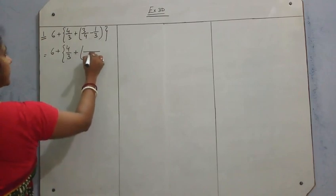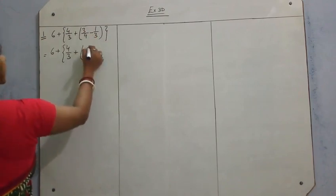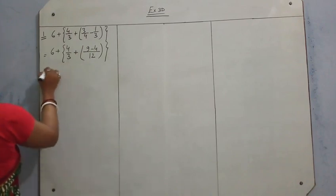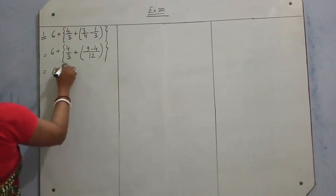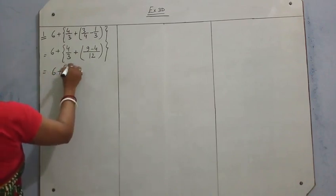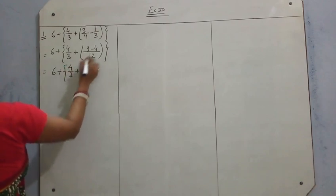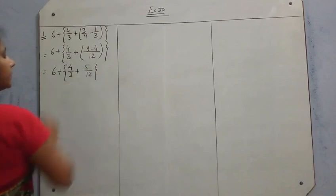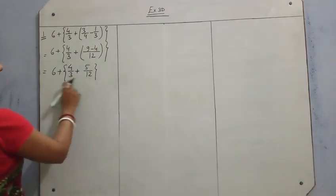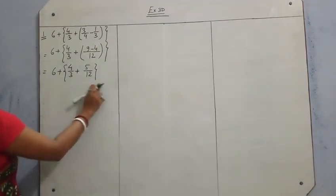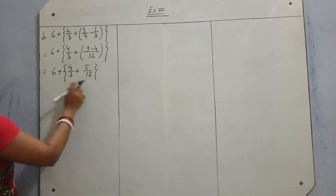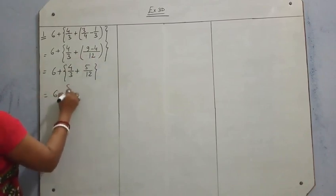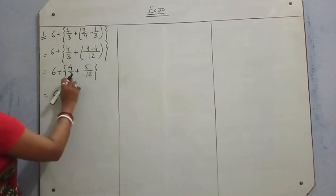The LCM of 4 and 3 is 12. So 4 gives 9 and 3 gives 4, so 9 minus 4 is 5. This gives 6 plus 4/3 plus 5/12. Now again we have to take LCM in the curly bracket — the small bracket is removed. The LCM will be 12.